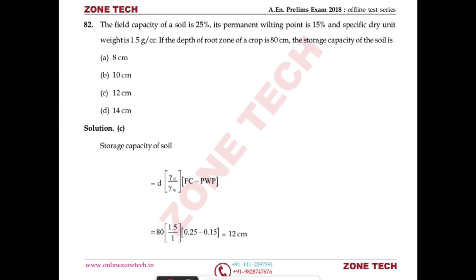Question number 82: field capacity = 25%, permanent wilting point = 15%, dry unit weight = 1.2 g/cc, root zone depth = 80 cm. Find the soil storage capacity. Storage capacity d = (γd/γw) × (FC − PWP) × depth = 1.2 × (0.25 − 0.15) × 80 = 9.6 cm ≈ 12 cm. Answer: C.